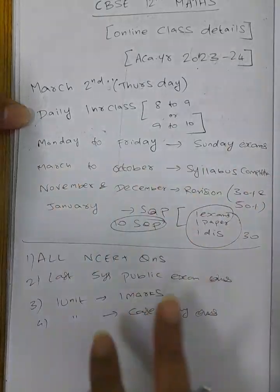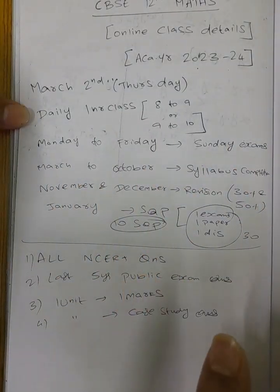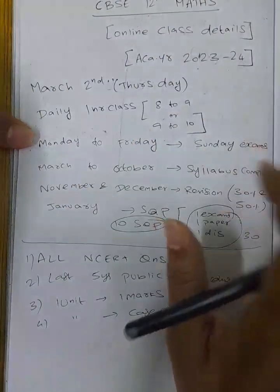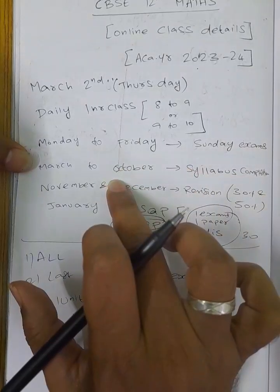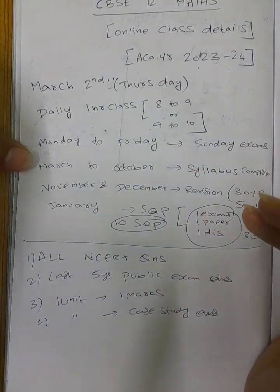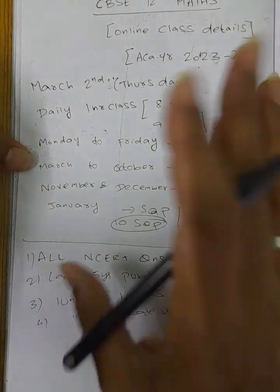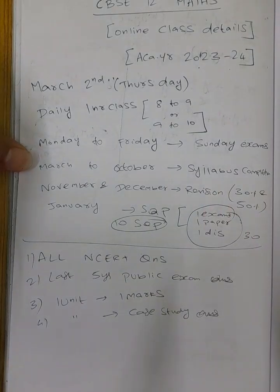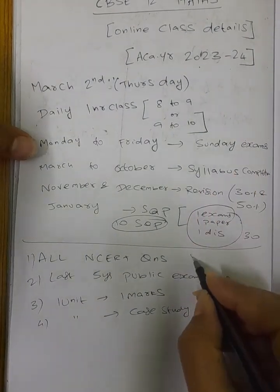March to October: NCERT last 5 year public exam questions, one by one unit, one-mark questions. November and December: NCERT question revision. If you have any doubts on a particular unit, for example unit 1 class completed but unit 7 doubts remain.